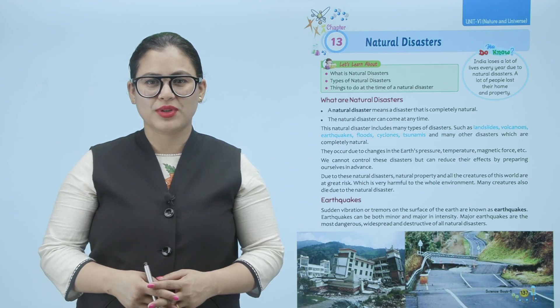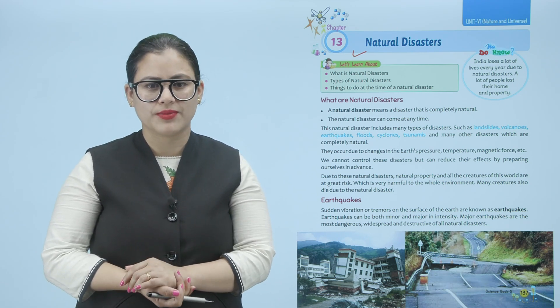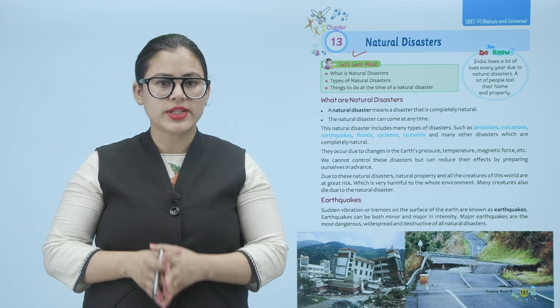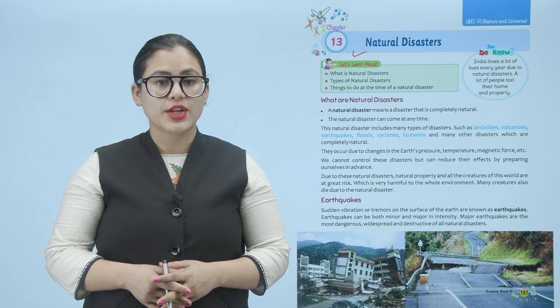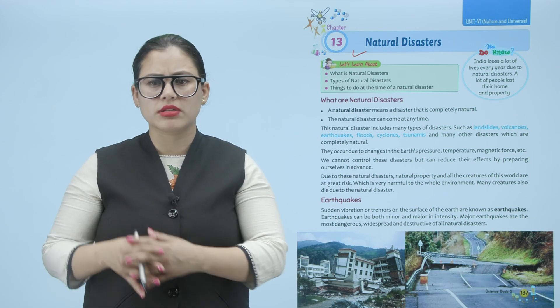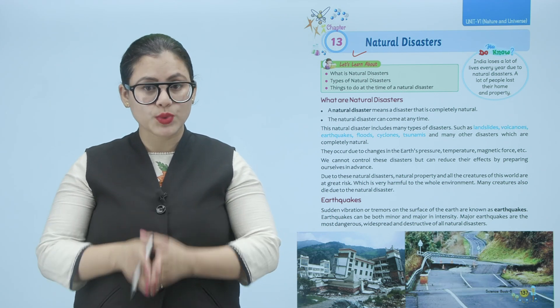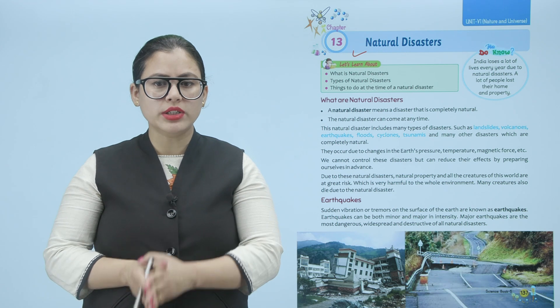Hello children, let's start with the chapter on natural disasters. We'll learn about what natural disasters are, their types, and things to do at the time of a natural disaster. A natural disaster means a disaster that is completely natural. It can come at any time and includes landslides, volcanoes, earthquakes, cyclones, tsunamis, and many others. They occur due to changes in the earth's pressure, temperature, and magnetic force. We cannot control these disasters but can reduce their effects by preparing ourselves in advance. Natural property and all creatures of this world are at great risk due to natural disasters.